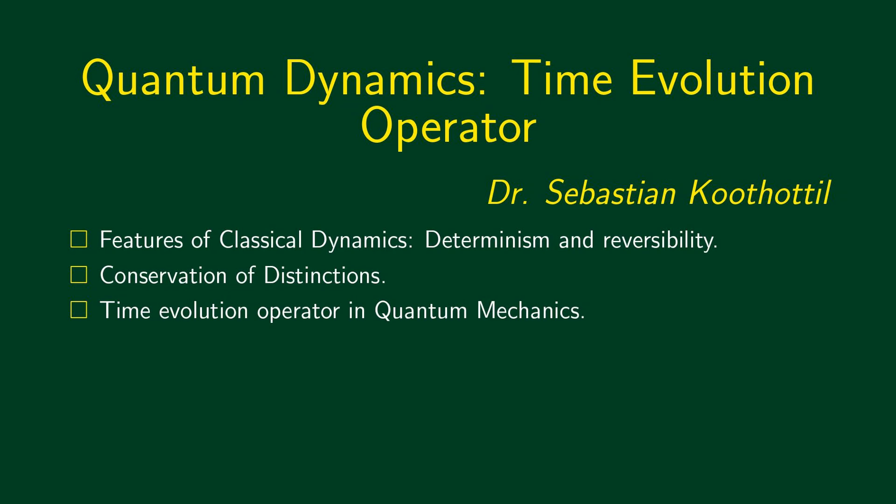These are called time evolution equations. They tell us how a classical mechanical state changes with time. We need to obtain such an equation also in quantum mechanics. We will look back to classical mechanics to get some idea as to what kind of equation we would like to have. We will discuss what is called determinism and reversibility — together called conservation of information — and based on these features, we will try to develop a time evolution equation in quantum mechanics.